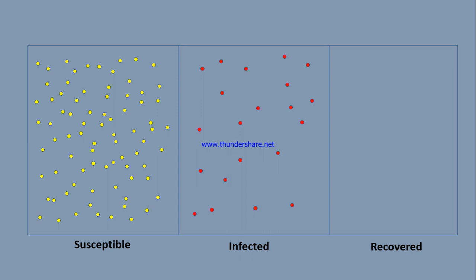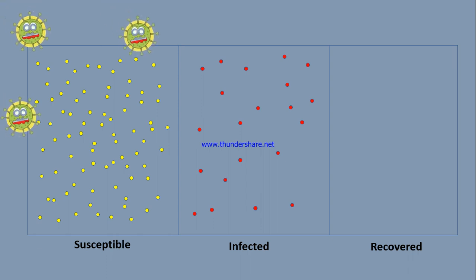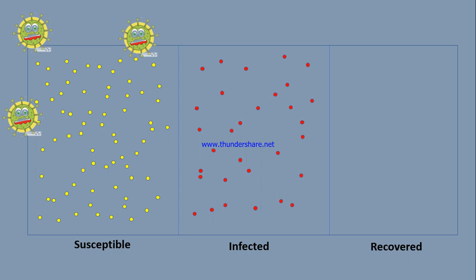Before proceeding with the mathematical modeling, let me briefly describe how the model works. Say we have a town where a thousand people live — initially all thousand are in the susceptible category. This model is also known as a compartmental model because we have three compartments: one for susceptible, one for infected, and one for recovered. If a virus attacks the population and some acquire it, those people transition into the infected compartment.